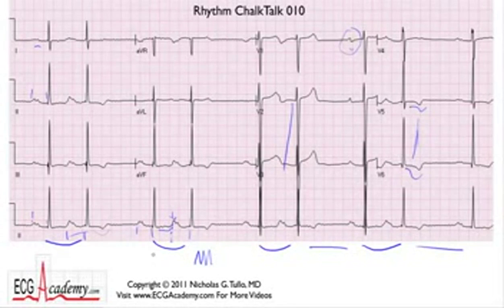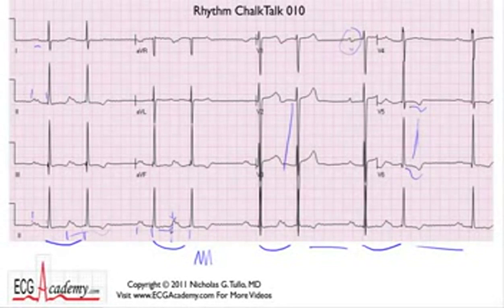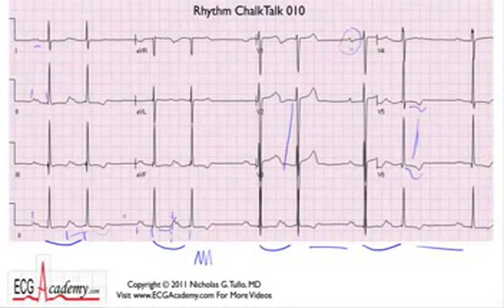You can use calipers if you don't trust me, but my eyes are looking at this and saying this is almost 360 milliseconds — very long. So you've got group beating, you've got pauses, and PRs are getting longer. So what do you think?